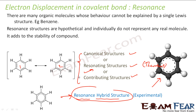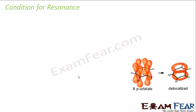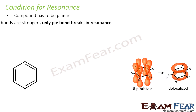Now the question is: which compound will show resonance and which will not? There are some conditions for resonance. The first condition is that the compound has to be planar — only if it is planar will the electrons be free to move around. For example, benzene is planar.